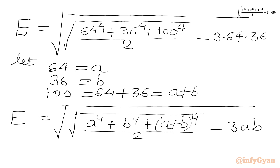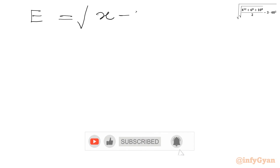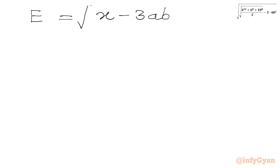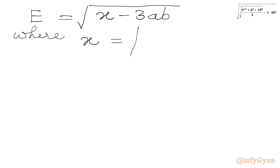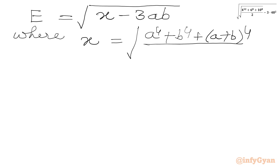Now we will let this square root segment equal x, so ultimately we are looking for the square root of x minus 3AB. So E equals the square root of (x minus 3AB), where x is the square root of (a to the power 4 plus b to the power 4 plus (a+b) to the power 4, over 2). We need to simplify x first.